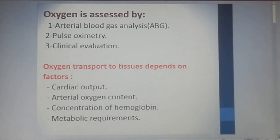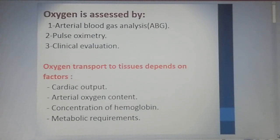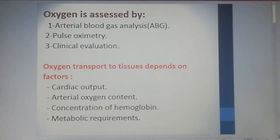How do we assess oxygen? We assess oxygen by arterial blood gas analysis, pulse oximetry, and clinical evaluation. How is oxygen transported to the tissue? It depends on many factors: cardiac output, arterial oxygen content, concentration of hemoglobin, and metabolic requirement.